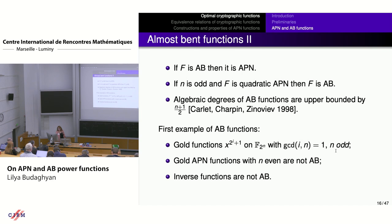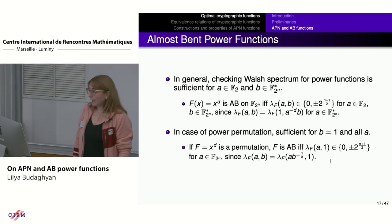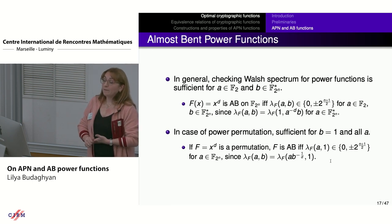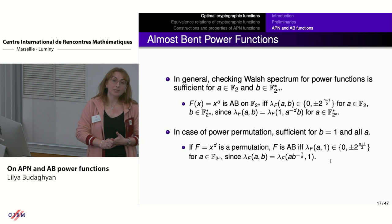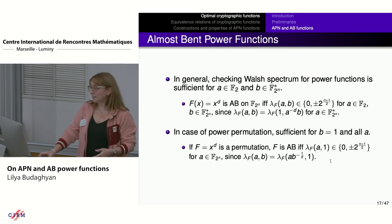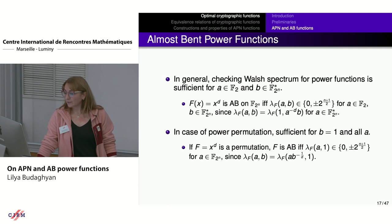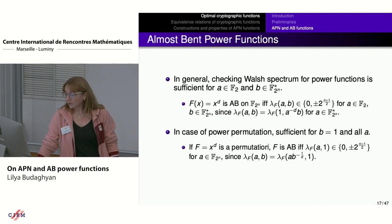There is a nice upper bound on algebraic degrees of almost bent functions: (n+1)/2, and this bound is reachable. The first examples of AB functions are also Gold functions, but restricted to n odd. When n is even, the function is APN but not AB. Even for n odd, there exist APN functions which are not AB — for example, the inverse function. For AB functions, power functions are easier to study: it suffices to consider Walsh coefficients for a being 0 or 1.